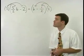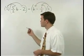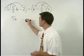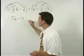On the left, 2 times 5 halves b is 5b and 2 times negative 2 is negative 4.